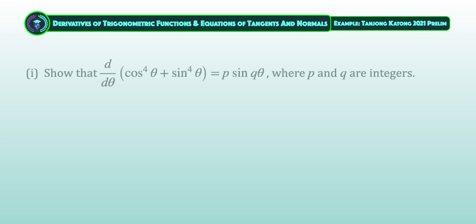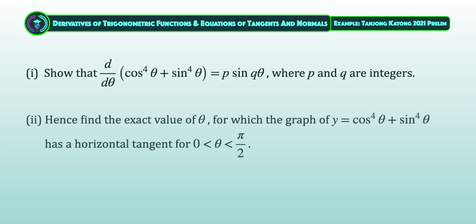The question begins by proving that the derivative of cos^4θ + sin^4θ is equal to p sin(qθ), where p and q are whole numbers. Using the result in part 1, we are required to find the exact value of θ for which the graph of y = cos^4θ + sin^4θ has a horizontal tangent if θ is acute. This question is from Dungeon Carton Secondary 2021 preliminary examination for GCE O-Level Additional Mathematics.